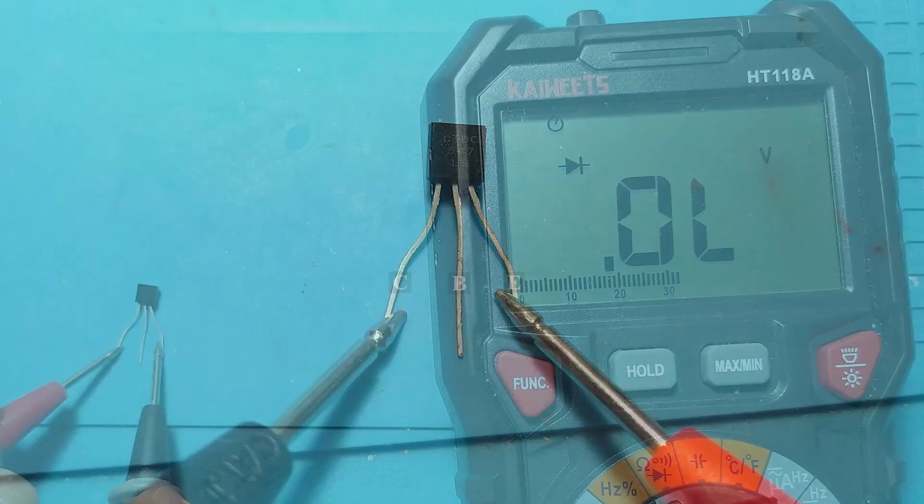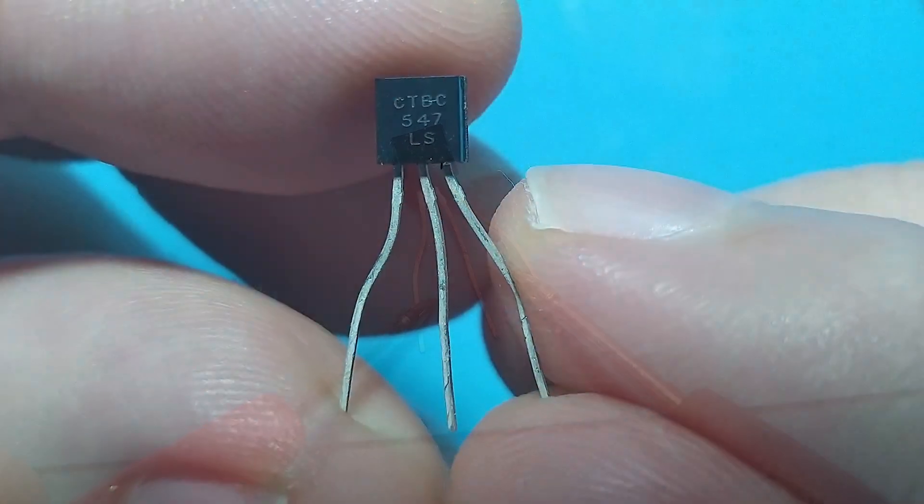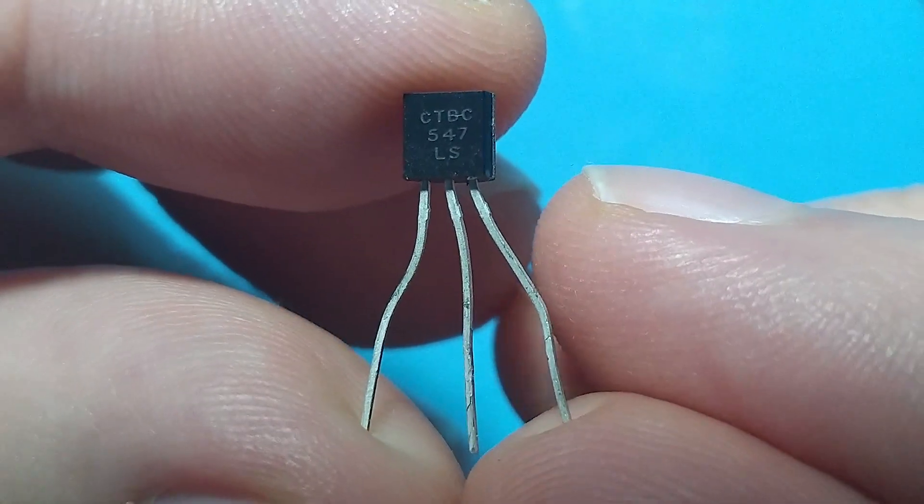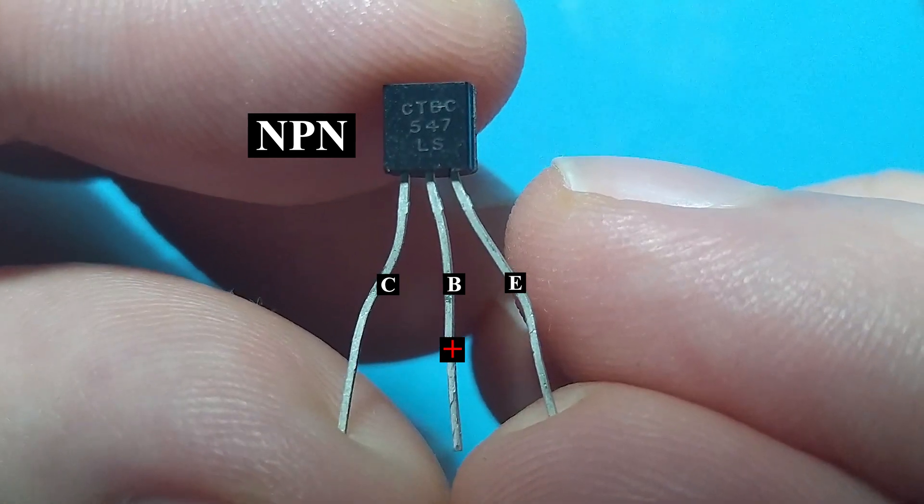Measuring between emitter and collector must not have any voltage drop, regardless of polarity. From these measurements, deduce that the BC547 transistor is of the NPN type, plus on the base.